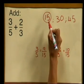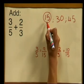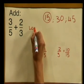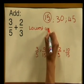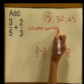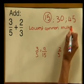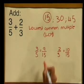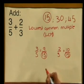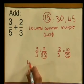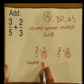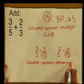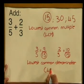Now, remember, we used 15 because it's the smallest number that both 3 and 5 divide into. It is called our lowest common multiple, and we abbreviate that to LCM. When we write the LCM in the denominator of a fraction, we call it the lowest common denominator, and we abbreviate that to LCD.